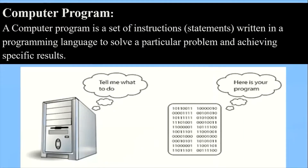First of all, we have to understand about the program, or a computer program. A computer program is a set of instructions and statements written in programming languages to solve a particular problem and achieve a specific result. It means that if you want to perform anything through the computer, you have to give instructions to the computer.